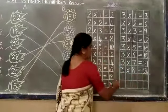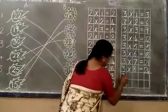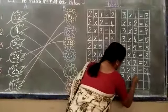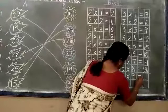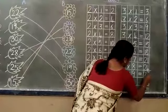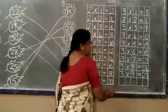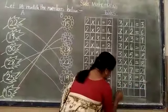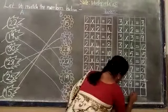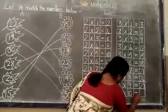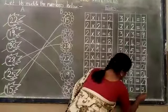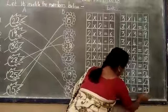Next, 3 into 9 is equal to 27. 3 nines are 27. 3 into 10 is equal to 30. 3 tens are 30.